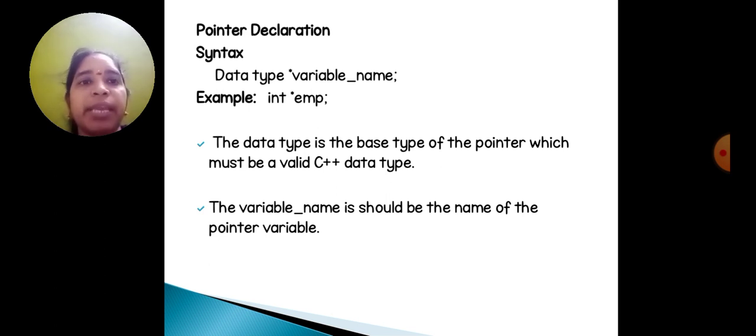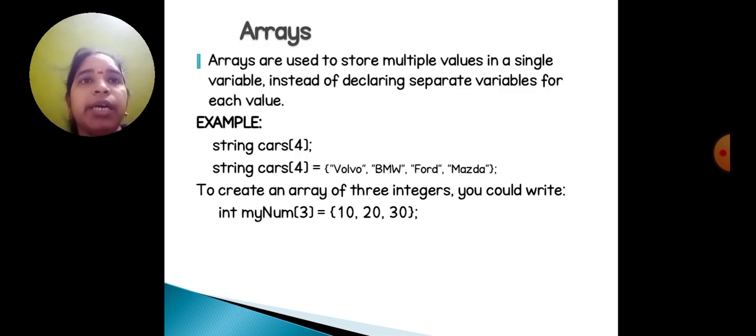The variable name should be the name of the pointer variable. Arrays are used to store multiple values in a single variable, instead of declaring separate variables for each value. Example: string cars within brackets, we give four or any number of variables.